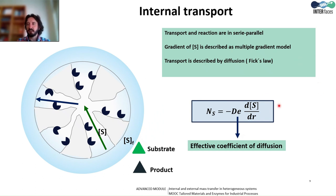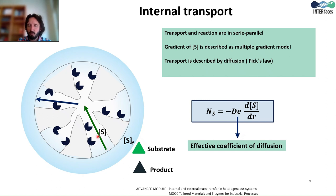Let's now discuss in more detail the internal transport and the interplay with the biochemical reaction. The internal transport is a phenomenon occurring by diffusion through the pores. In this case, in the pores, we have the two phenomena taking place simultaneously: the substrate is diffusing and the substrate is getting consumed. So transport and reaction are occurring in parallel. In this case, we don't have just two well-defined substrate concentrations, but the substrate concentration is continuously decreasing along the radius of the particle. So the gradient of the substrate is described as a multiple gradient model. The extent of the transport cannot be defined with a single algebraic equation, since the substrate concentration is continuously changing along the radius. The extent of transport is defined by Fick's law — the multiplication of the diffusion coefficient and the gradient of the substrate, which is the first derivative of the substrate concentration over the radius.